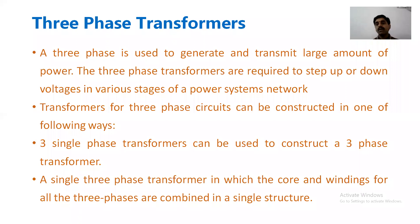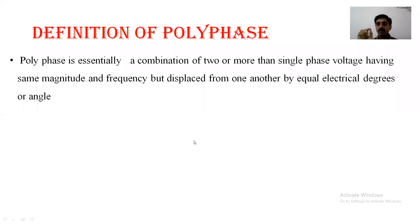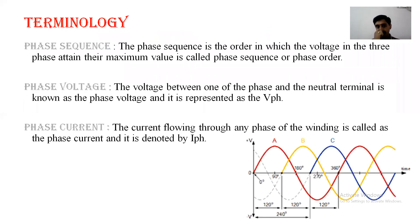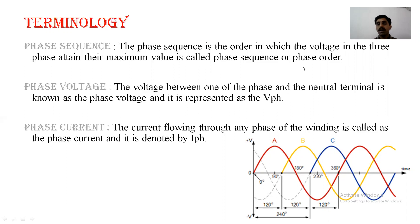Before going to the three-phase transformer, one must have an idea about polyphase. Polyphase is a combination of two or more single-phase voltages having the same magnitude and frequency but displaced from one another by equal electrical degrees — that means 120 degrees — that is called polyphase. We must also have an idea about phase sequence: R, Y, B or A, B, C. The order in which the voltage of the three phases attains their maximum value is called phase sequence.